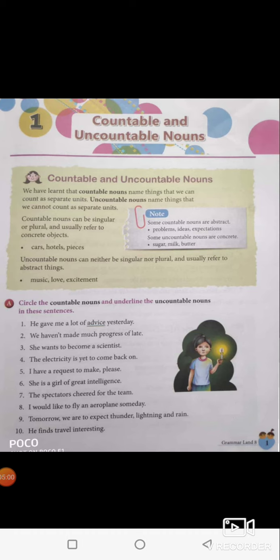The spectators — spectators is already in plural, so it is countable. Circle spectators. For the team — team also can be counted, team is a countable noun. I would like to fly an aeroplane someday — aeroplanes can be counted, so it is a countable noun, so you have to circle it.